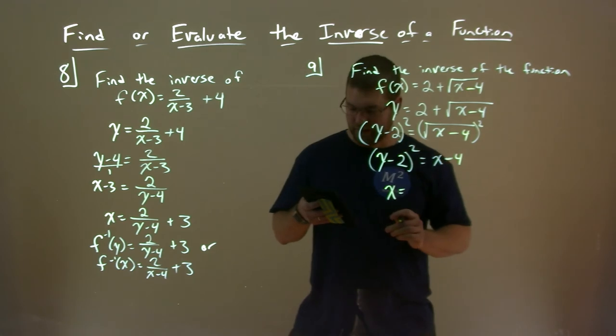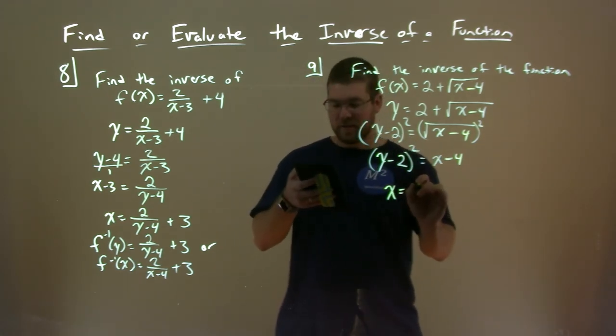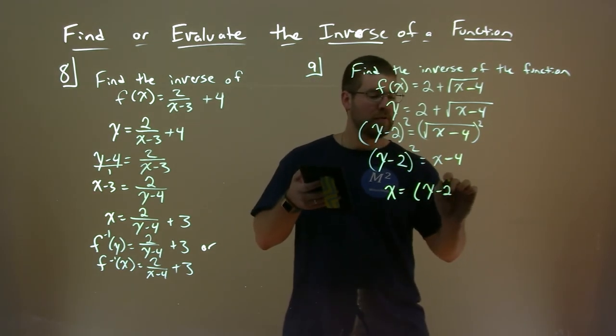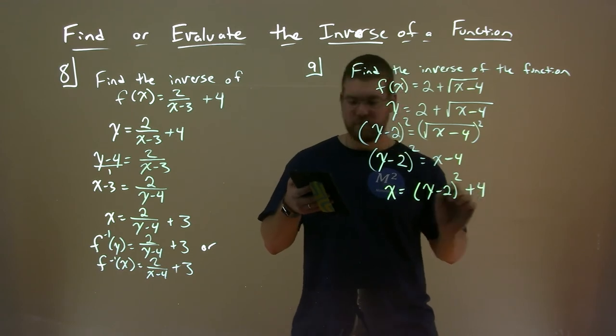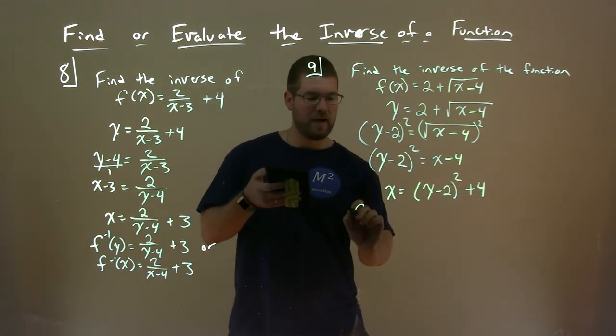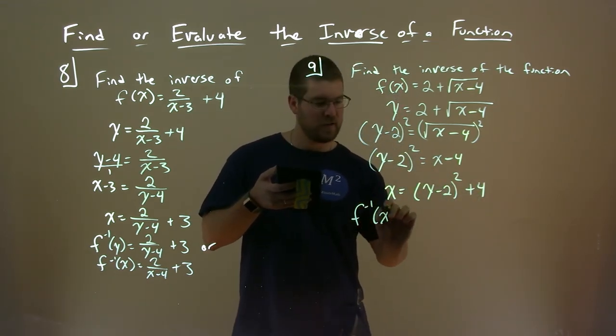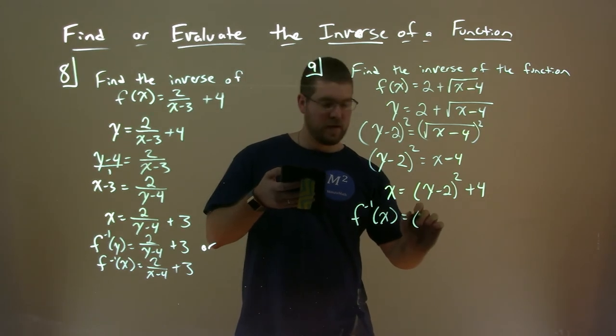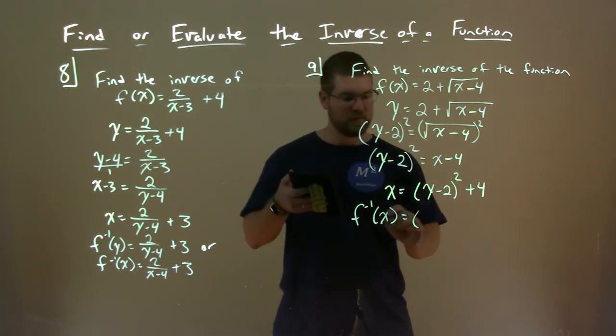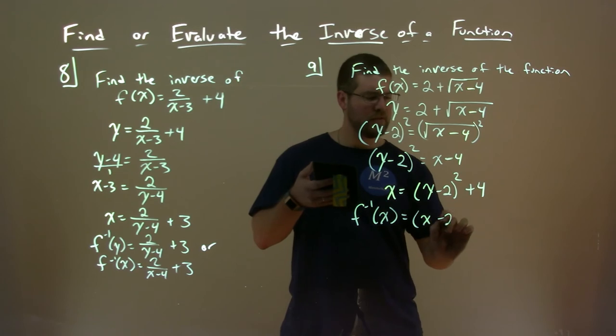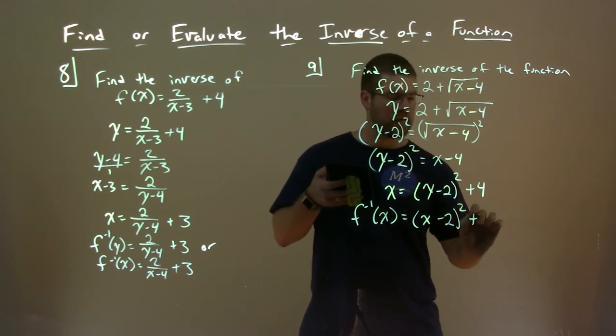And now it would make a difference. That's why I caught it. And x equals y minus 2 all squared plus 4. So our f inverse of x is equal to x minus 2 squared plus 4, switching the y's and the x's.